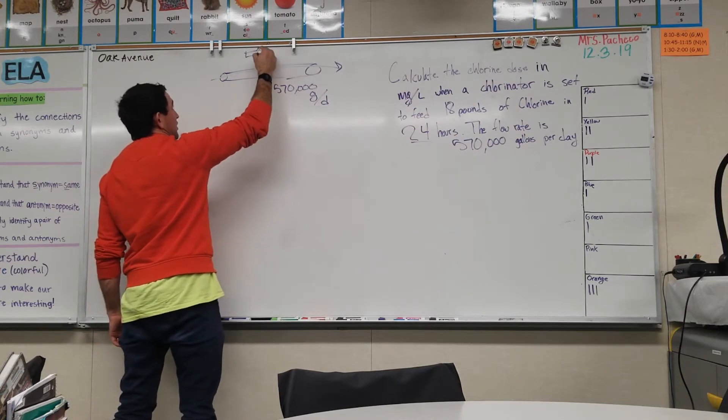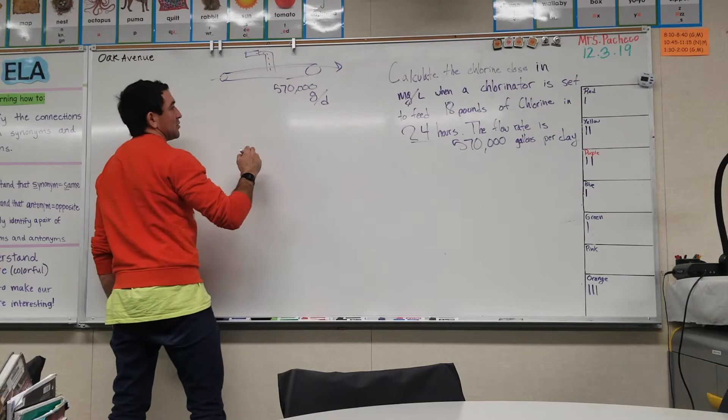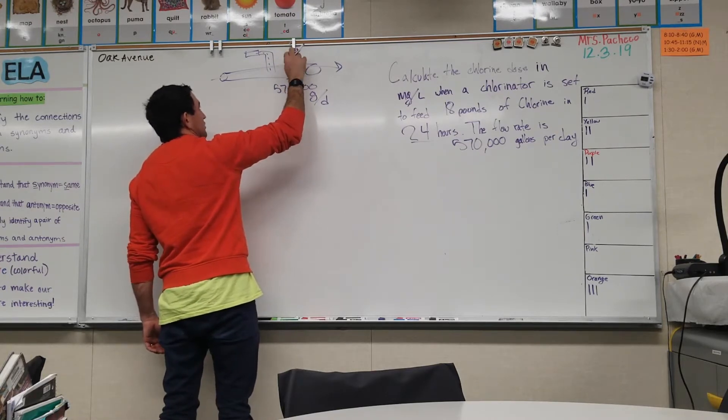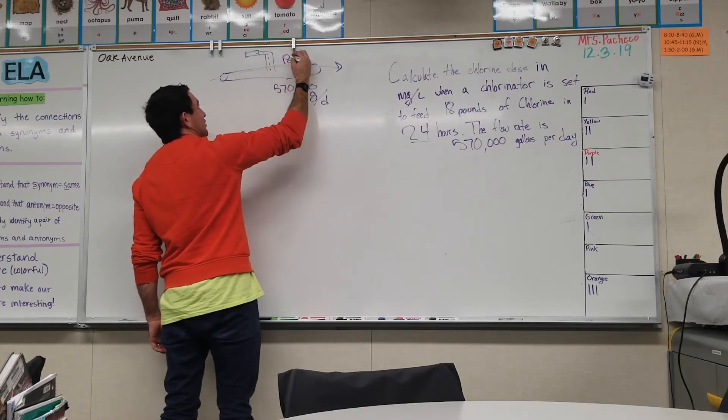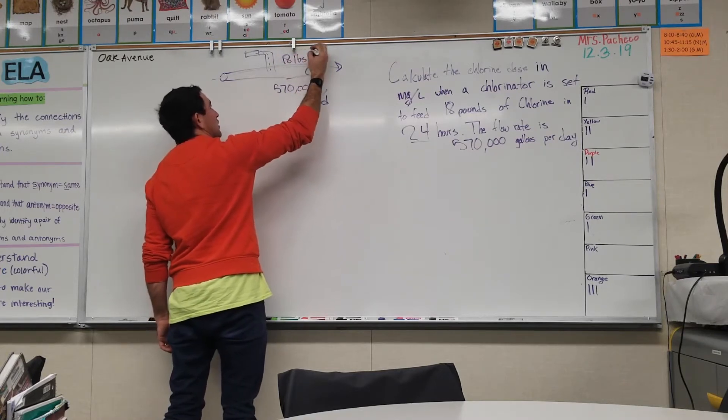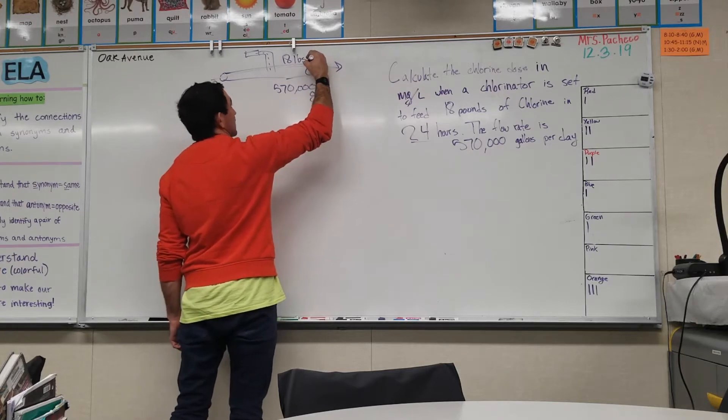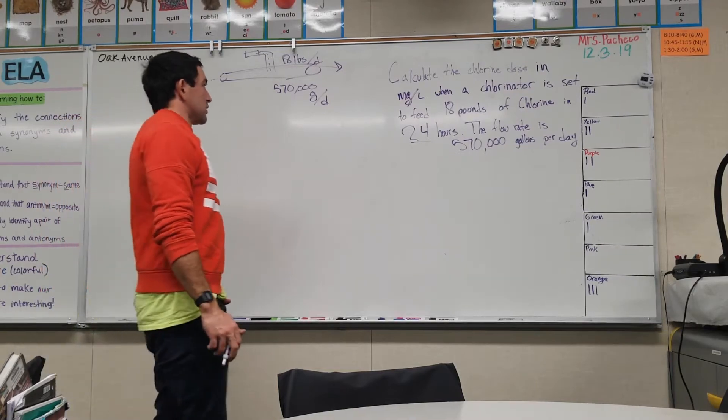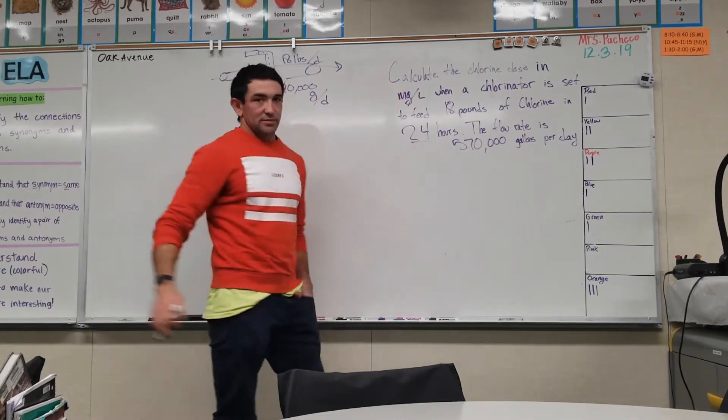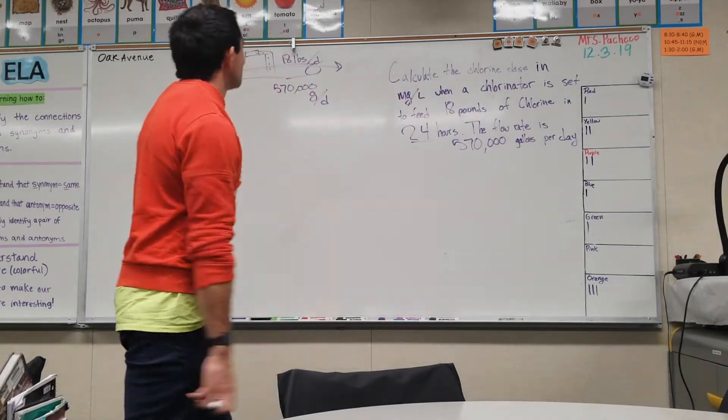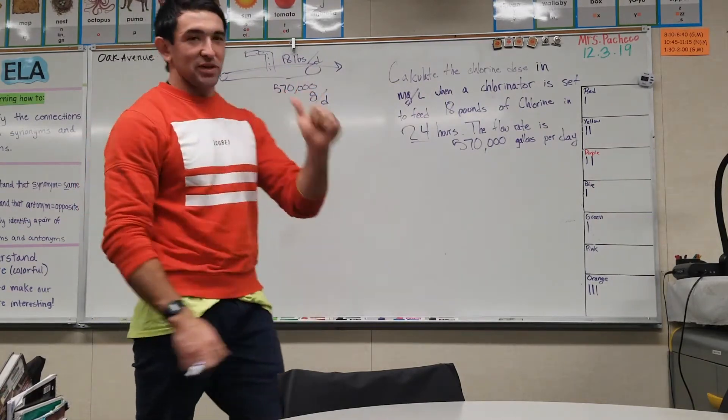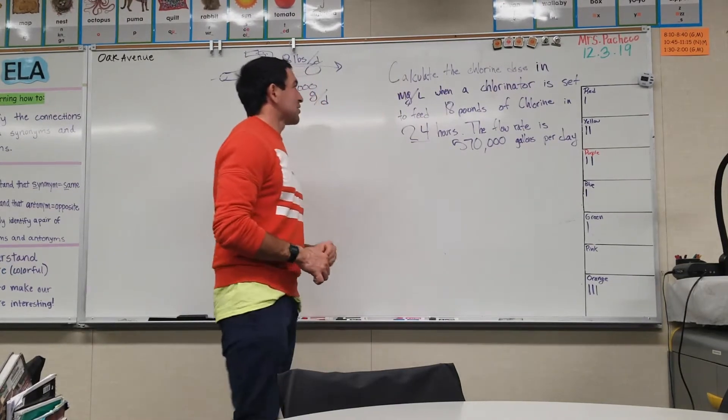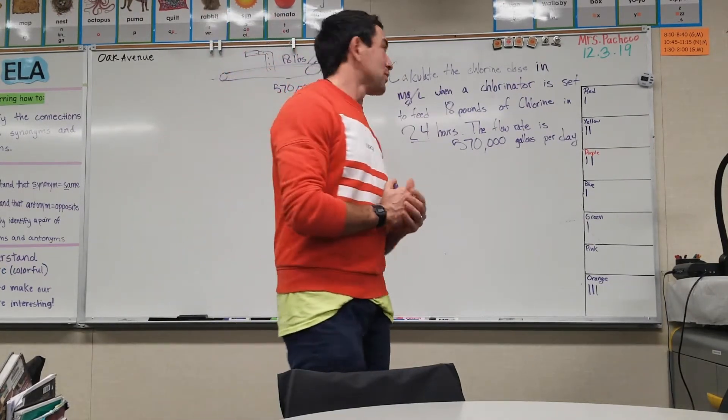That's dropping in 18 pounds of chlorine per day, 18 pounds per day of chlorine, because 24 hours is a day. So we're only given two things here: pounds per day of chlorine and the flow. We need to find out the milligrams per liter.